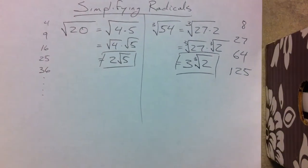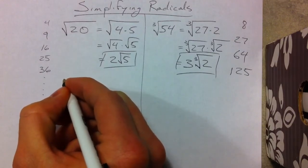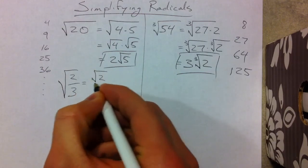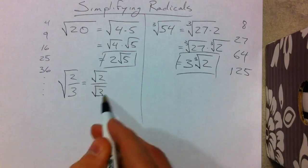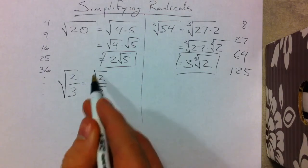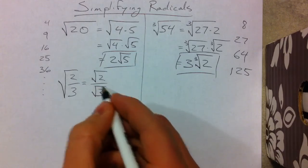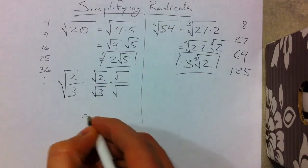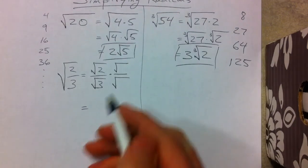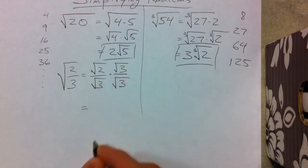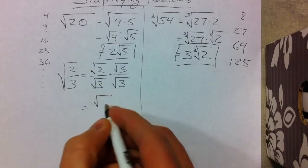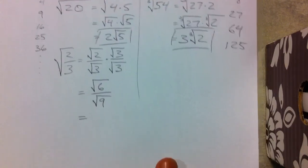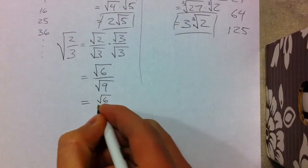We also rationalized, which was getting the radical out of the denominator. If we had something like the square root of 2 over 3, we reduce that to the square root of 2 over the square root of 3. The problem is there's a radical in the bottom, and even though it's a bit old-fashioned, we still rationalize it. By making the bottom a perfect square, we multiply by the square root of 3 over the square root of 3, giving us the square root of 9 on the bottom, which reduces to the square root of 6 over 3.